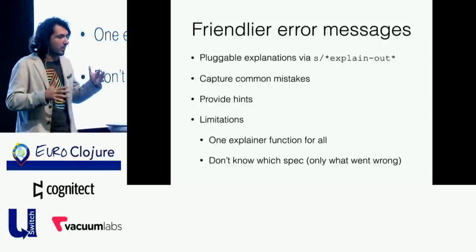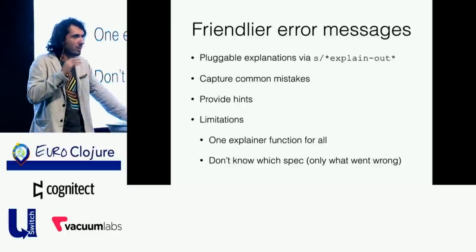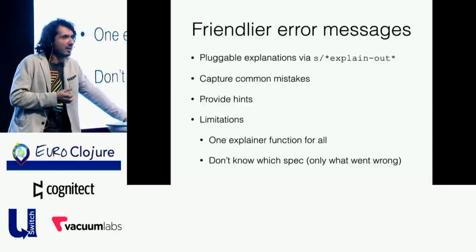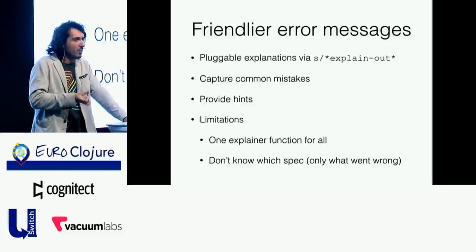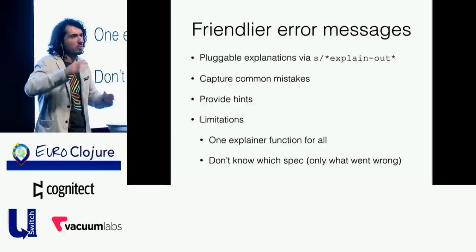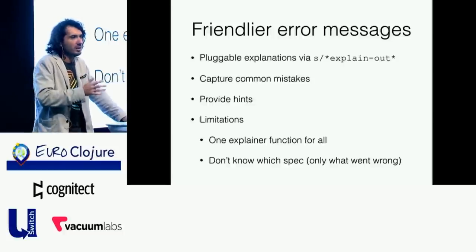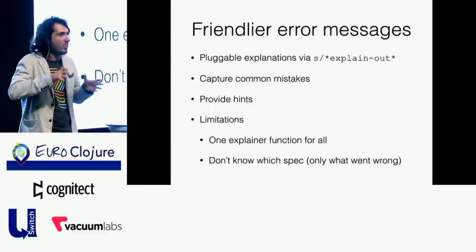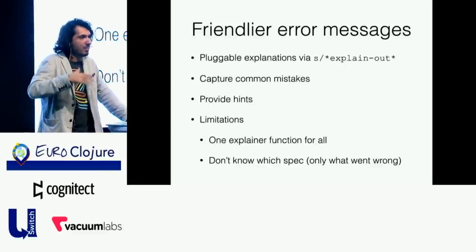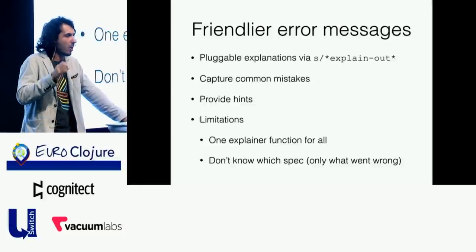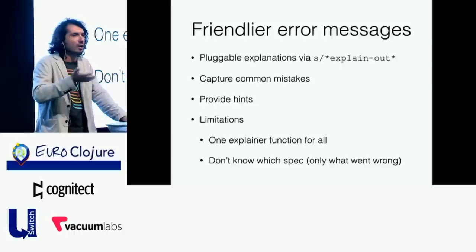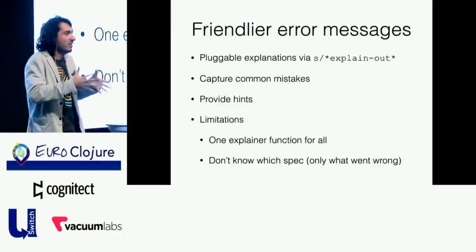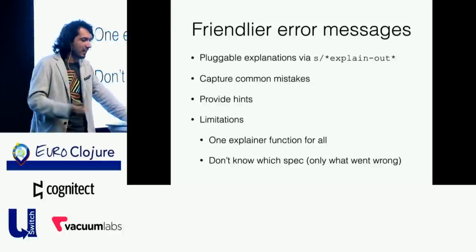The last point about error messages I want to drive home is that we can now actually build a database of errors, and we have rigid data to do this. Going forward, if you imagine pulling those things together with what resolutions were found for those problems, maybe tying it with changes in your version, we can have a very profound understanding of what the mistakes were at the level of code, and even maybe build systems on top of that which would already suggest common solutions and fixes — rather than just letting Stack Overflow do all the thinking.